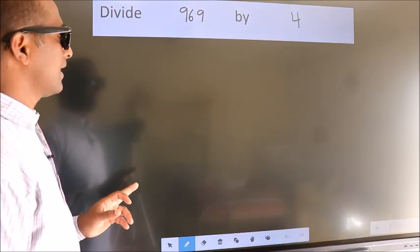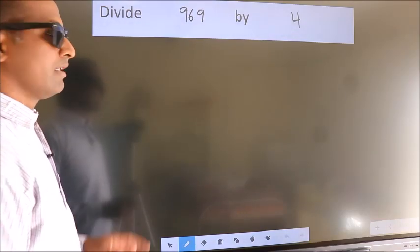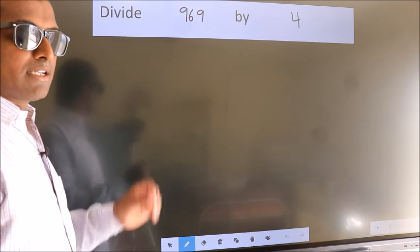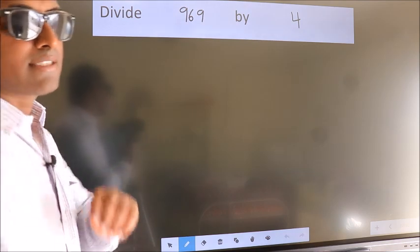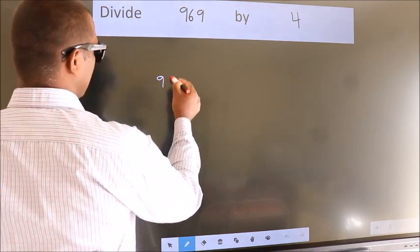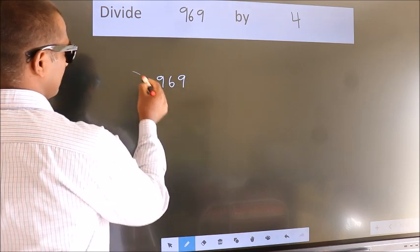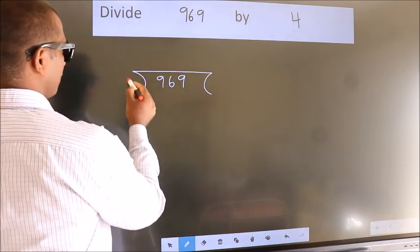Divide 969 by 4. To do this division, we should frame it in this way: 969 here, 4 here.